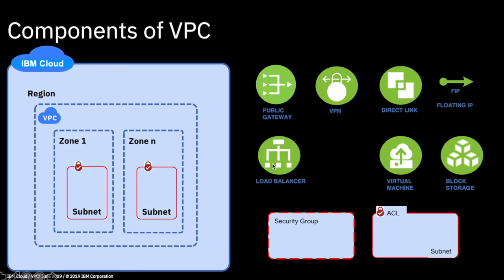You can get a load balancer as a service, which works similarly to other load balancers. It can load balance traffic coming in between two zones, sitting logically between them and directing traffic between subnets. A virtual machine is a virtual server instance created within your subnets. You can also create block storage — effectively SAN-like storage — which connects easily to your virtual machines.